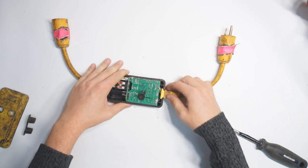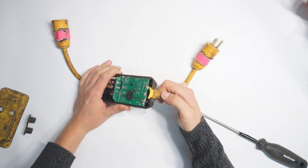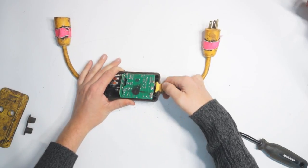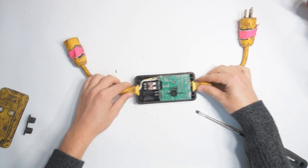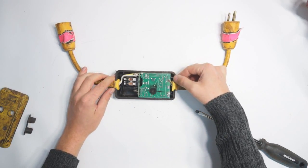They've used a molding. They've actually fused the strain relief on both of these power cords and molded it right to the plastic.